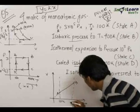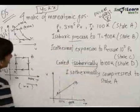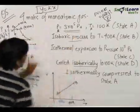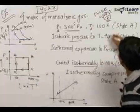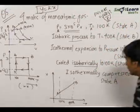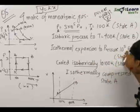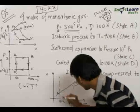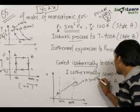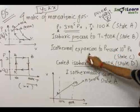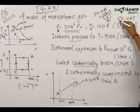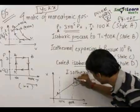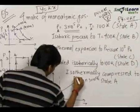From B it undergoes isothermal expansion to a pressure of 10⁵ Pascals. The pressure was initially 3×10⁵ Pa and it reduces. Since the process is isothermal, temperature is constant. Using PV = nRT, as pressure reduces with temperature constant, the right-hand side is constant, so the volume must increase. Therefore the volume increases at constant temperature, moving horizontally on the VT diagram to a higher volume. The line from A through B (at 3×10⁵ Pa) is a steeper straight line through the origin; at point C the pressure is 10⁵ Pa.